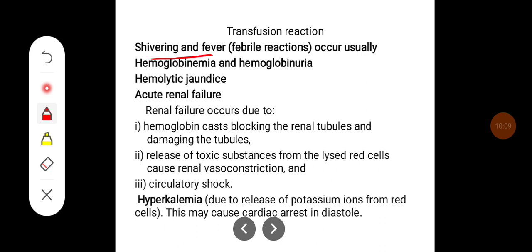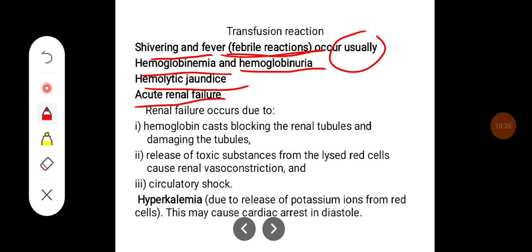Initially there can be shivering and fever — febrile reactions — which are commonly seen because of the liberation of toxic substances due to hemolysis. There can be hemoglobinuria, as the released hemoglobin can be lost through the kidneys, and it can lead to hemoglobinemia. There can also be hemolytic jaundice and acute renal failure. Acute renal failure mainly occurs because of hemoglobin casts blocking the renal tubules, or because of the release of toxic substances from lysed red cells causing renal vasoconstriction.